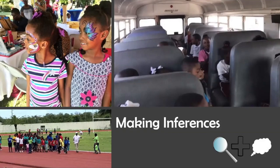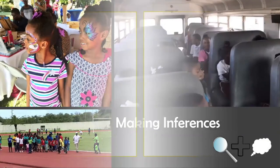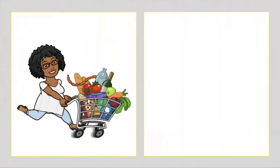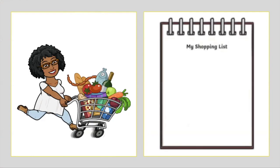Now, sometimes, boys and girls, when we look at the text or the words, we have to make an inference as well. Take a look at this — I need to go to the store, and here is my shopping list. Can you read it with me? I need nails, a hammer, a wrench, a saw, and a screwdriver. Excellent reading, boys and girls.